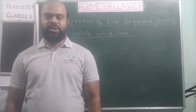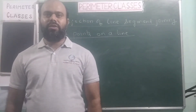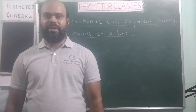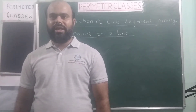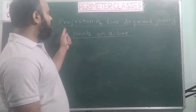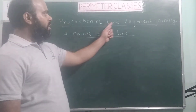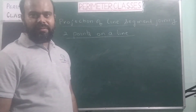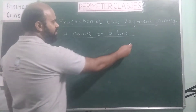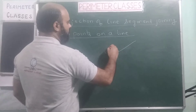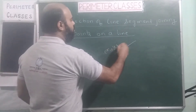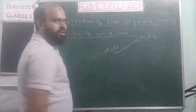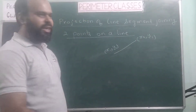Hello students, welcome to this fourth lecture of the topic, chapter 3-dimensional geometry. In this particular lecture we are going to study the projection of a line segment joining two points on a line. If we have been given two points and we join these two points to get a line segment, what is its projection on a given line?